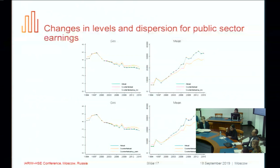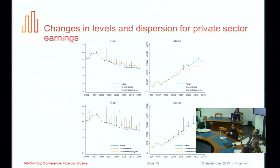The dashed orange line returning to the actual state means that on average, public sector earnings increased at the same rate for everyone — meaning it is about levels, not about dispersion, since earnings increased for everyone equally. This means the increase in levels resulted in a decrease in income inequality and poverty in Russia. Similar results hold for pensions. For private sector earnings, however, the dashed orange line does not come back to the actual line, which means private sector earnings did not increase for everyone at the same rate. Therefore it is about a decrease in dispersion of private sector earnings, which resulted in the decrease in income inequality and poverty.